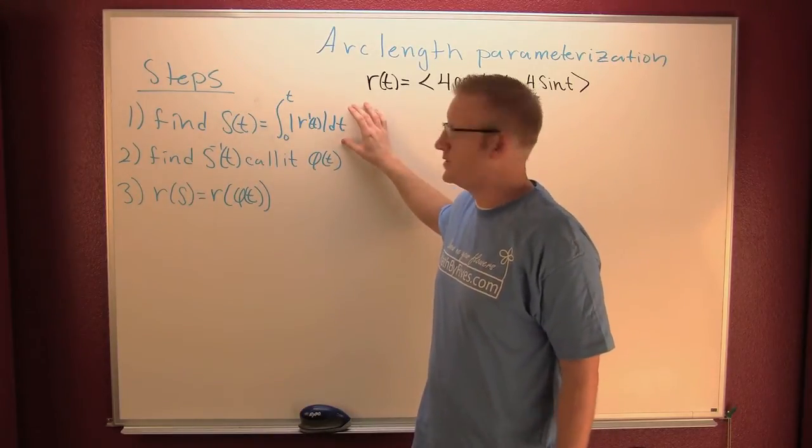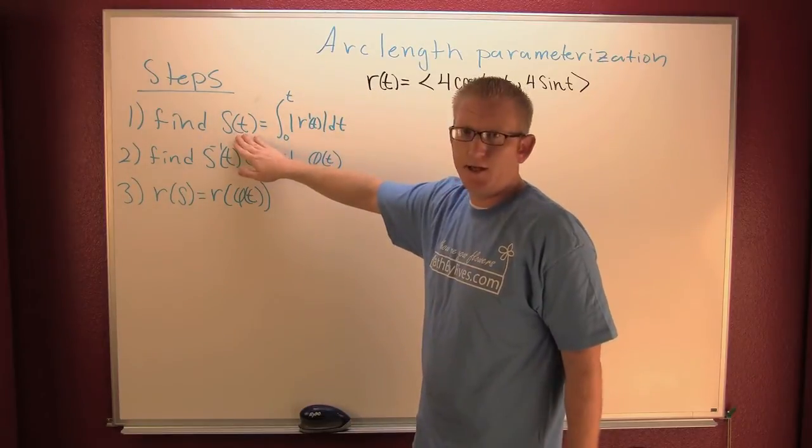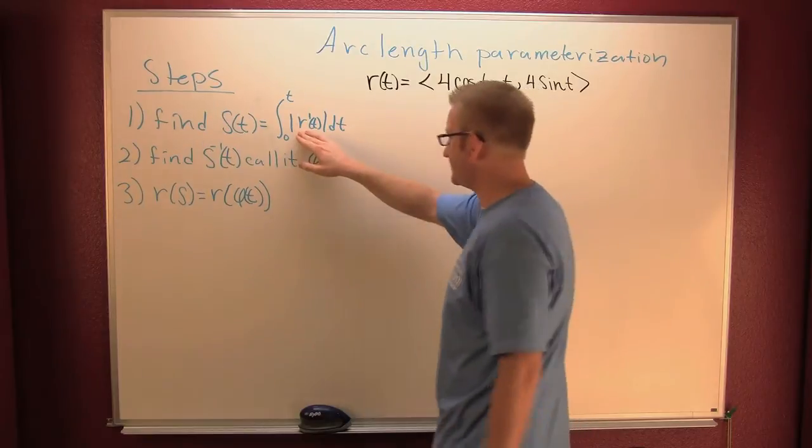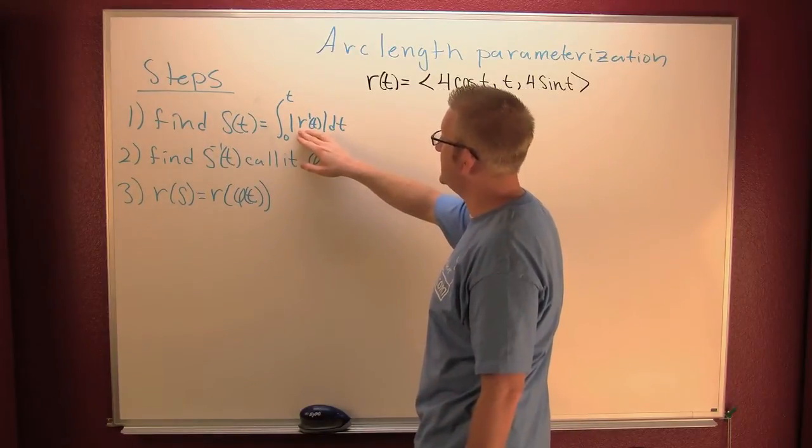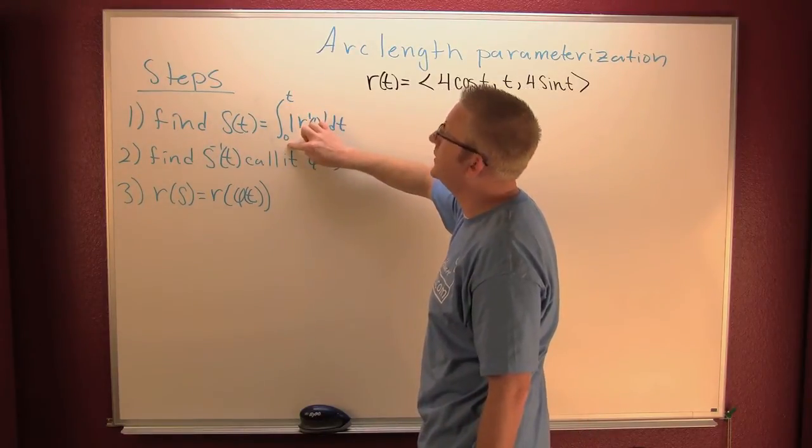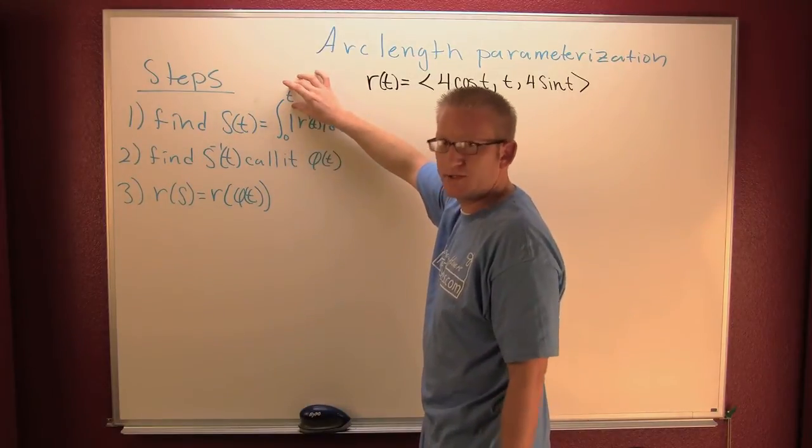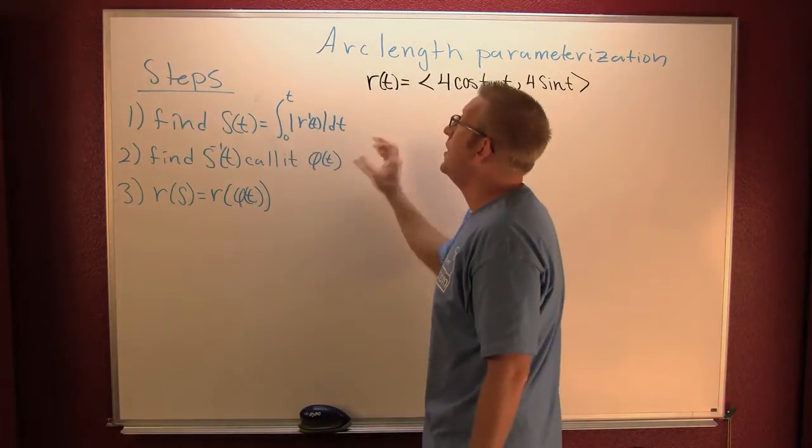The first thing you're going to want to do is find your arc length. Arc length is the derivative of the position function integrated from your starting point zero to some other ending point, let's call it T.